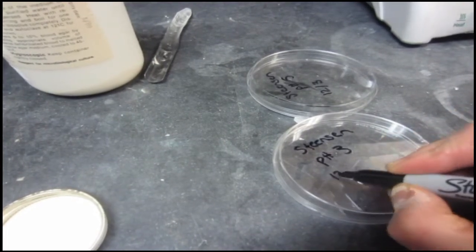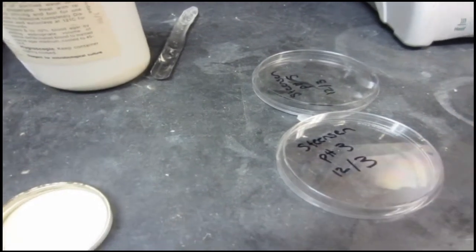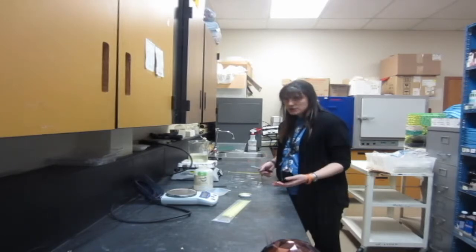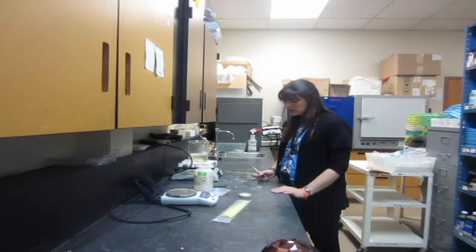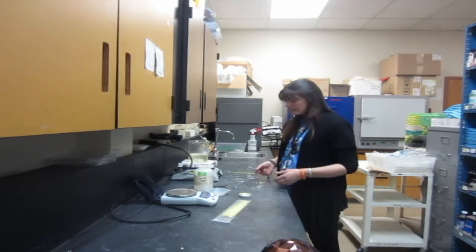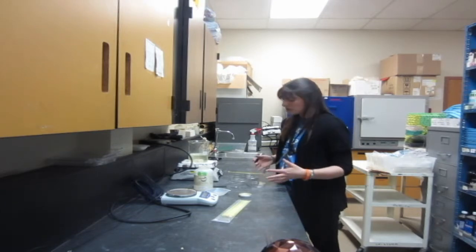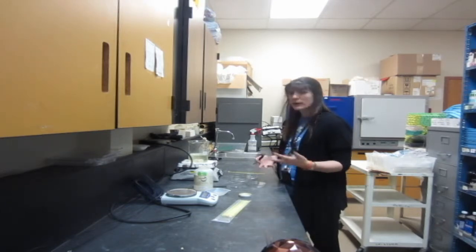You want to label it with your name. You want to label it with whatever trial it is that you're doing. Let's say you're changing pH. You want to change the pH in here and then add the agar, so you want to label what type of pH you're doing. It's also a good idea to put the date on there so you know when this was made, especially if you're doing a lot of different trials. That'll help you to stay organized.